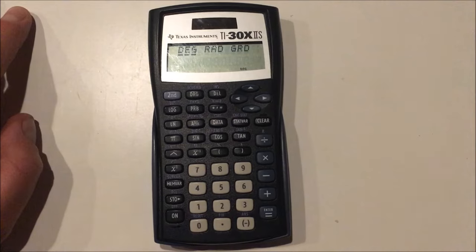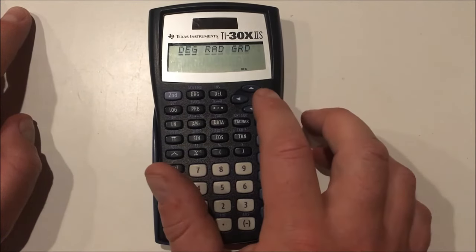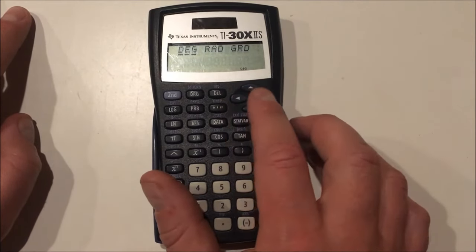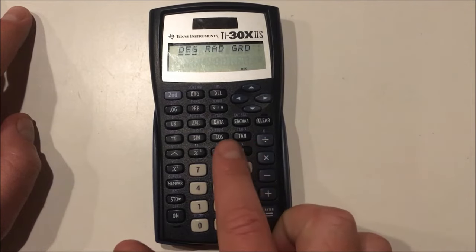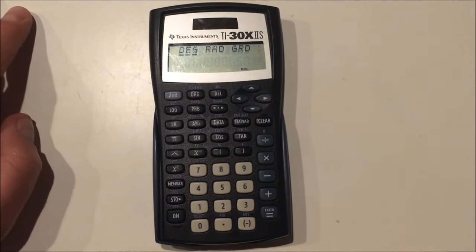These are different types of angles, and so normally we switch back and forth between degrees and radians. And this is used for the trig buttons, like sine, cosine, and tangent, which I'll get to a little later.